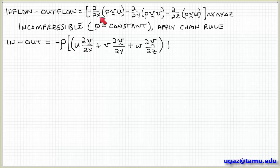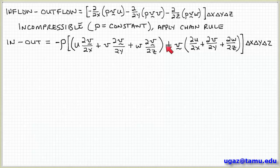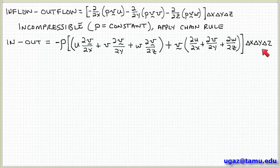Collecting the first terms from the chain rule, where I have the derivative of the vector v: u times the partial of vector v with respect to x, plus scalar v times the partial of vector v with respect to y, plus w times the partial of vector v with respect to z. For the second part, holding vector v constant, I sum the derivatives: partial of u with respect to x, plus partial of v with respect to y, plus partial of w with respect to z — all times delta x delta y delta z.